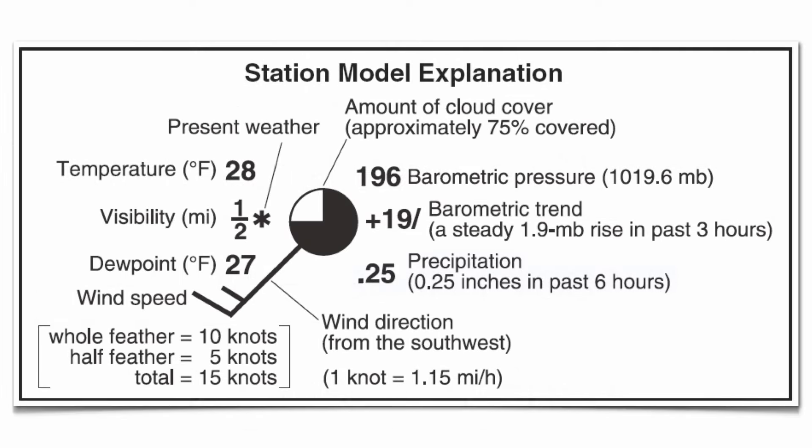The last variable is going to be your precipitation. This is the only piece of information on your station model that actually has a decimal on the station model itself. That's going to tell you how much precipitation has fallen over the last six hours. So that's it for your station model — good luck with that, and we'll talk to you soon.